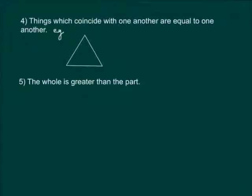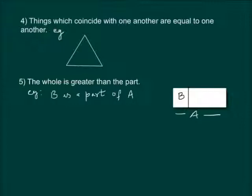Next axiom says, the whole is greater than the part. This would mean, if B is a part of A, then A will always be greater than B, and A can be written as sum of B and some third quantity C.